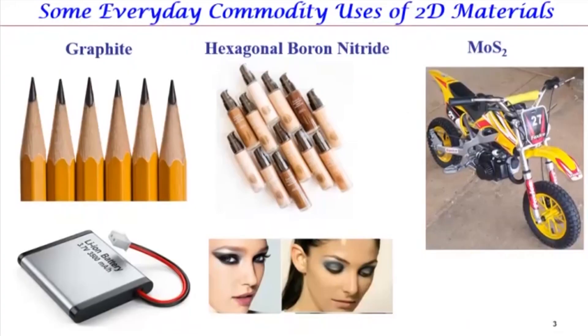Some commodity applications of 2D materials are already familiar to us. The most popular is pencils. Hexagonal boron nitride is used heavily in the makeup industry. MoS2 is used as a lubricant in vehicles. The property that makes these materials universal for such applications is that they are solid lubricants — they're very anisotropic, so material easily flakes off from the parent crystal.